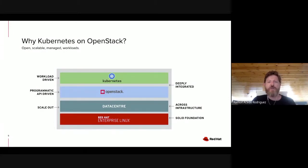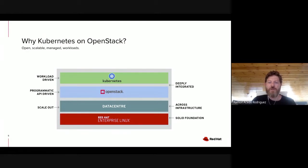Why Kubernetes on OpenStack? Kubernetes is workload-driven — what we care about as developers using Kubernetes is the workloads. We love working through Kubernetes's API and CLI, but in the end, what we are doing is working on our workloads. At the same time, Kubernetes and OpenStack are deeply integrated. This integration is the result of years of work to make Kubernetes consume OpenStack resources properly and understand how to use them in a programmatic way. OpenStack is 100% API driven.